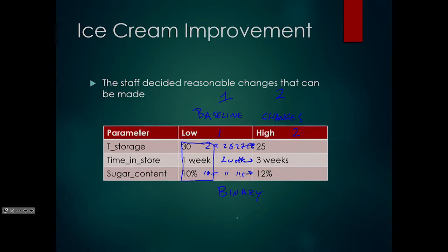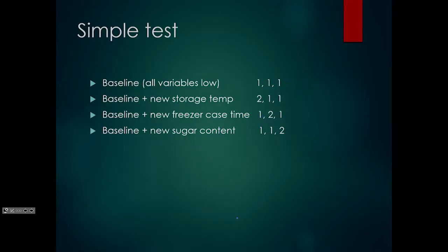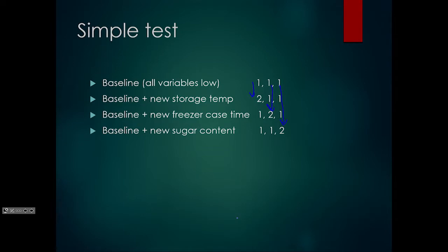The simplest test is to start with the baseline. The baseline will be represented by one, and the changes by two — the low value is one, the high values are two. The first test has all variables at the baseline: one, one, and one is what we have now. Then they go through each variable and increase: raise the first variable to two and see how that affects things, raise the second variable to two, and raise the third variable to two. That's the simplest case, following the standard scientific method of leaving everything else the same and changing just one thing at a time.